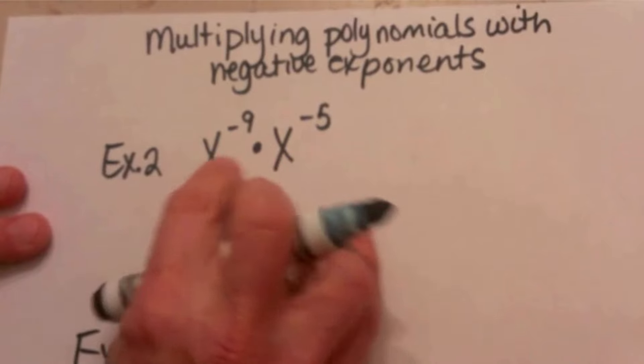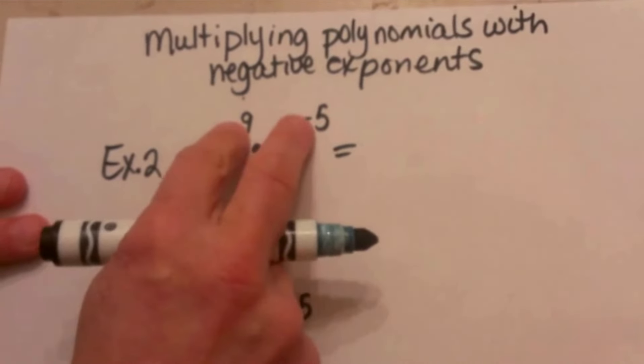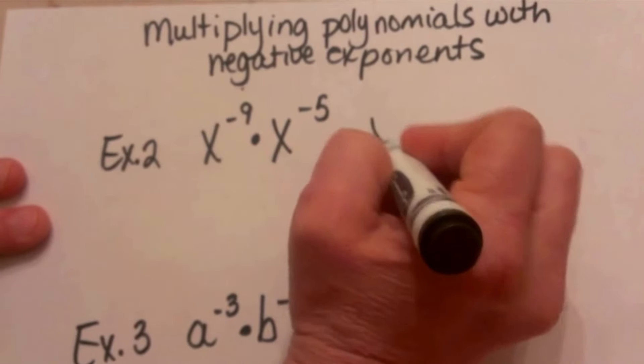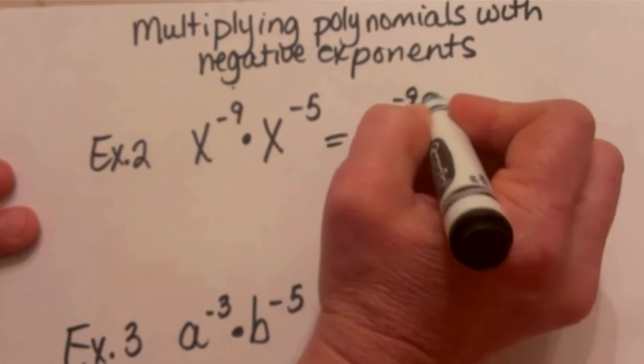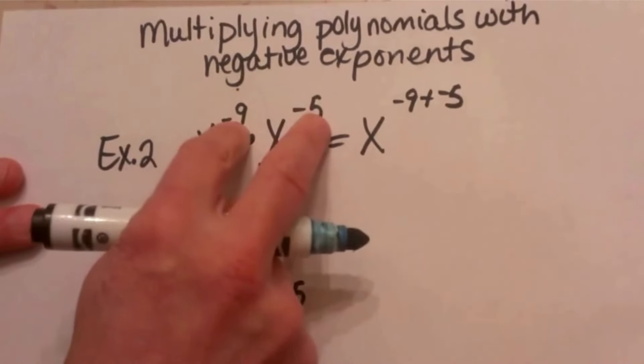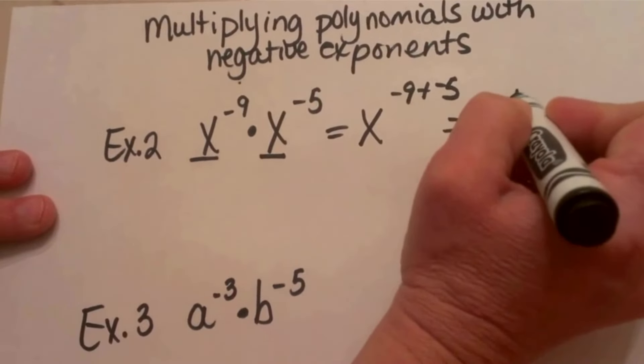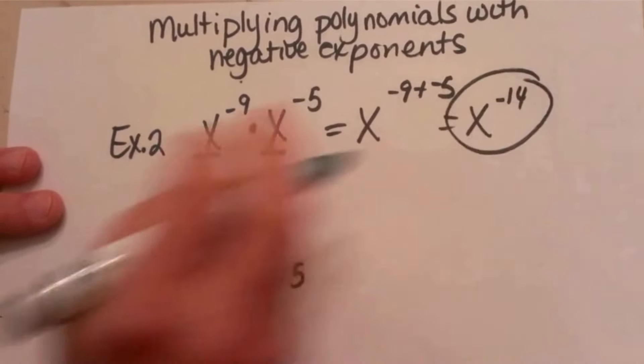The rule for multiplying polynomials is to add the exponents. So I'm going to have x to the negative 9th plus the negative 5th. Because the bases are matching, I can just add the exponents, so that's going to be x to the negative 14th, and that's your final answer.